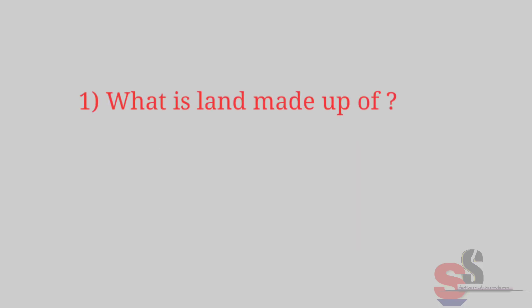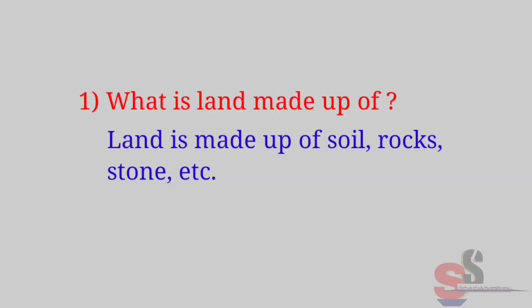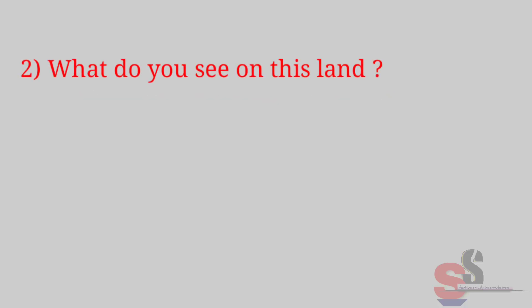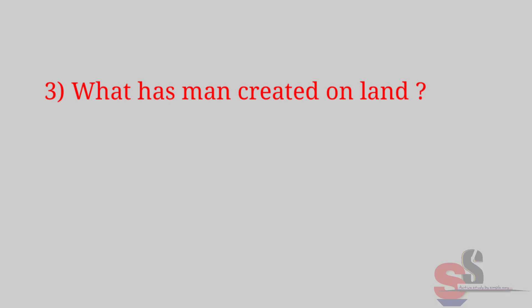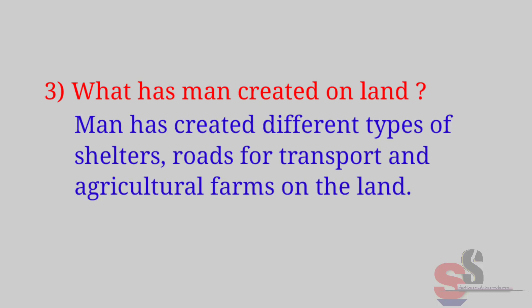Can you tell? 1. What is land made up of? Answer: Land is made up of soil, rocks, stone, etc. 2. What do you see on this land? Answer: Mountains, valleys, rivers, oceans can be seen on the land. We can also see buildings, constructions, bridges, roads, farms, orchards and tree cover. 3. What has man created on land? Answer: Man has created different types of shelters, roads for transport and agricultural farms on the land.